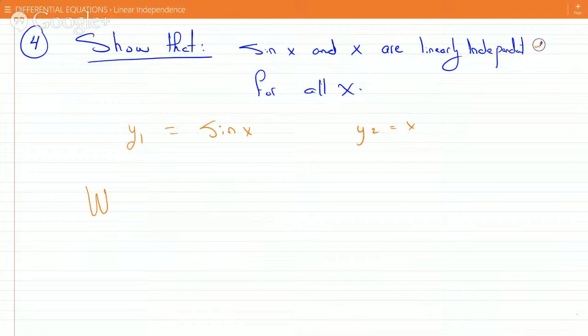We prove that the Wronskian, which is sine x, x, and this here underneath is the derivative of sine x, which is cosine x, and here the derivative of x is 1. And then when you figure out the determinant of this, you'll get sine x minus x cosine x.